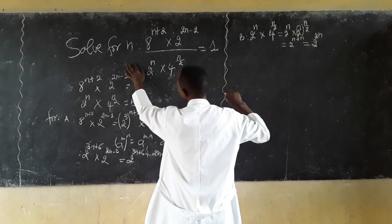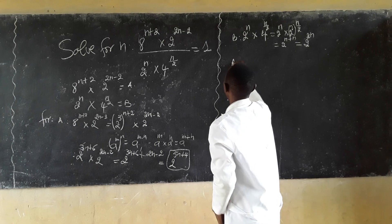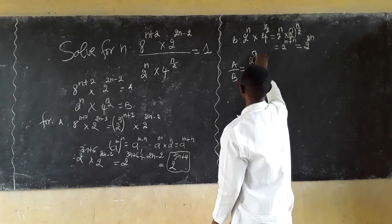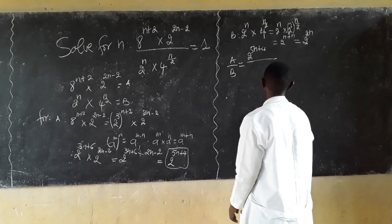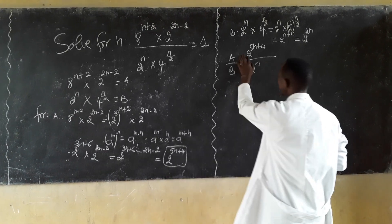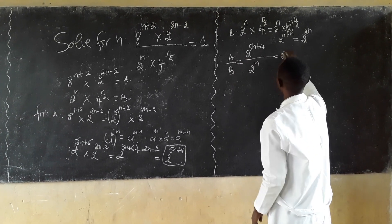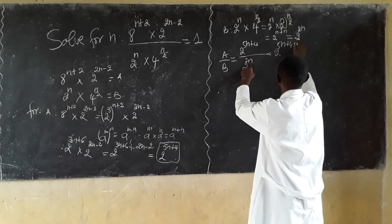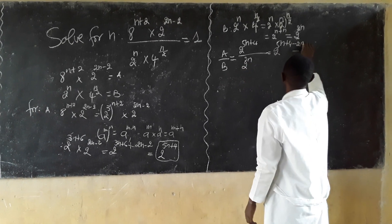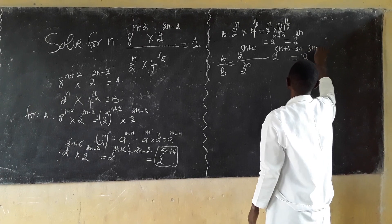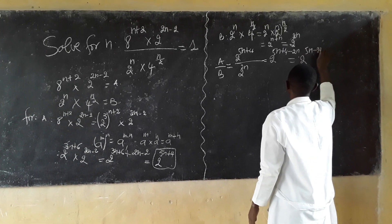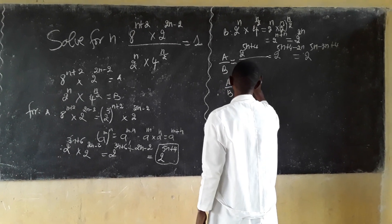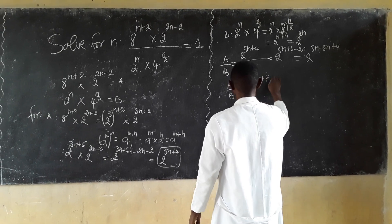Now replace H and V in the equation: H divided by V equals 2 power 5n plus 4 divided by 2 power 2n. This simplifies to 2 power 5n plus 4 minus 2n, which equals 2 power 3n plus 4.